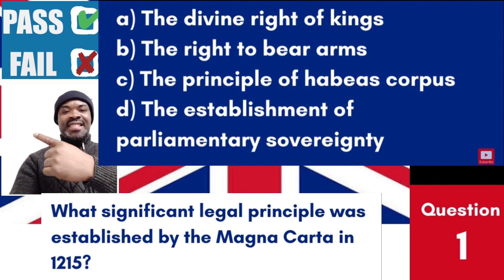Question 1: What significant legal principle was established by the Magna Carta in 1215? a. The divine right of kings. b. The right to bear arms. c. The principle of habeas corpus. d. The establishment of parliamentary sovereignty. Answer: c. The principle of habeas corpus. The Magna Carta established the legal principle of habeas corpus, protecting individuals from unlawful detention.